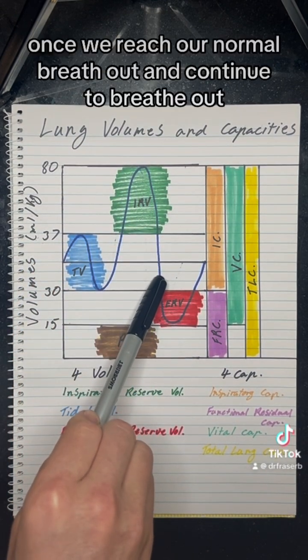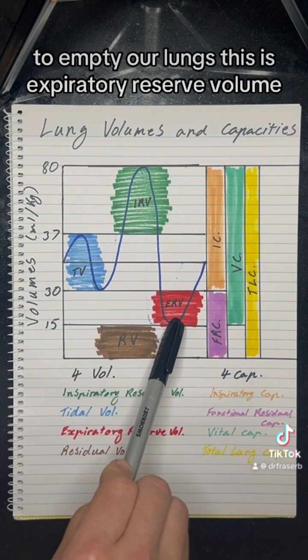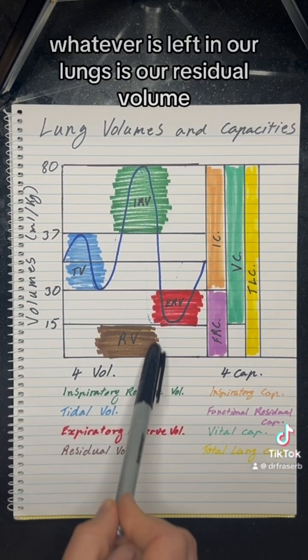Then we breathe out. Once we reach our normal breath out and continue to breathe out to empty our lungs, this is expiratory reserve volume. Whatever's left in our lungs is our residual volume.